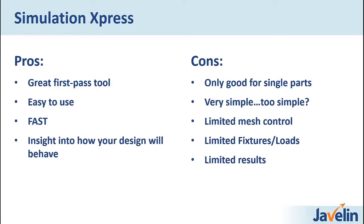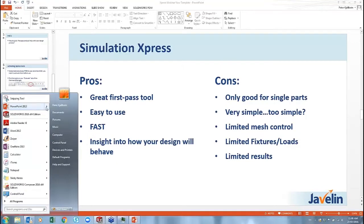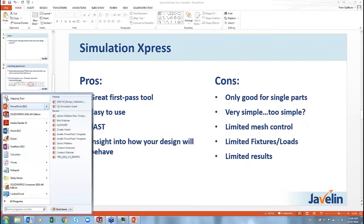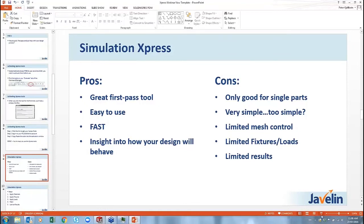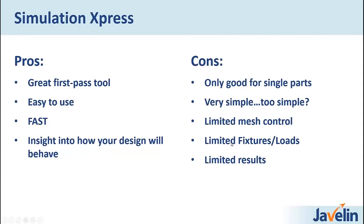Simulation Express is a finite element analysis tool. Any FEA program takes your part, breaks it down into thousands of tiny little pieces with very simple deflection equations, and solves for how much the part bends. Once we figure out how much it deflects, we can back-calculate how much the model stretched — what we call strain — and with the material properties we can calculate stress to find out how heavily loaded the part is and how close you are to breaking or yielding.